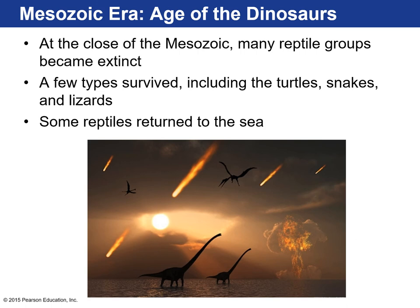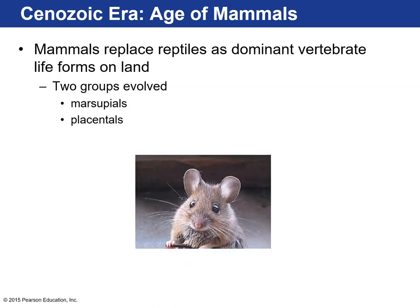Then another major mass extinction — the asteroid that struck Earth, creating the Chicxulub Crater. Many of the reptile groups became extinct; some made it through that bottleneck — we still have reptiles today: sea turtles, alligators, snakes. Some larger reptiles died off, but those small rodent-like mammals survived that mass extinction event, and then they became the dominant land species. That was the beginning of the Cenozoic.